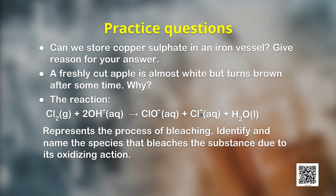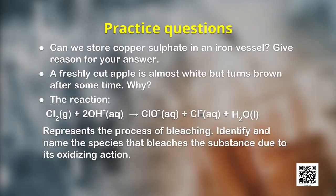Let me leave you with an assignment. First question: can we store copper sulphate in an iron vessel? Give a reason for your answer. Second: a freshly cut apple is almost white but turns brown after some time — why? Third question: the reaction where chlorine gas reacts with hydroxyl ions and forms hypochlorite ion and water represents the process of bleaching. Identify and name the species that bleaches the substance due to its oxidizing action. Dear learners, I am sure you are looking forward to some interesting and amazing concepts related to redox reactions. But till then, take care. Thank you.